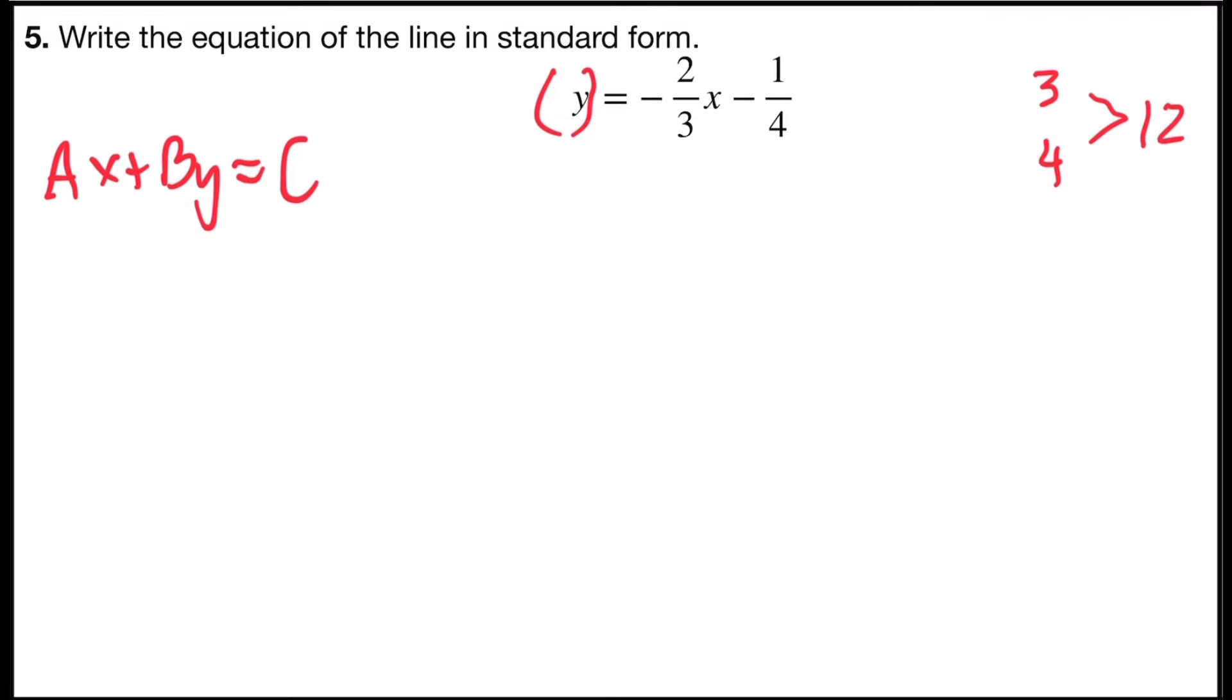So I'm going to multiply both sides by twelve. So twelve times y is twelve y on the left side. On the right side, three divides into twelve four times, and four times negative two is negative eight x. For the one-fourth, four divides into twelve three times, and three times negative one is negative three.